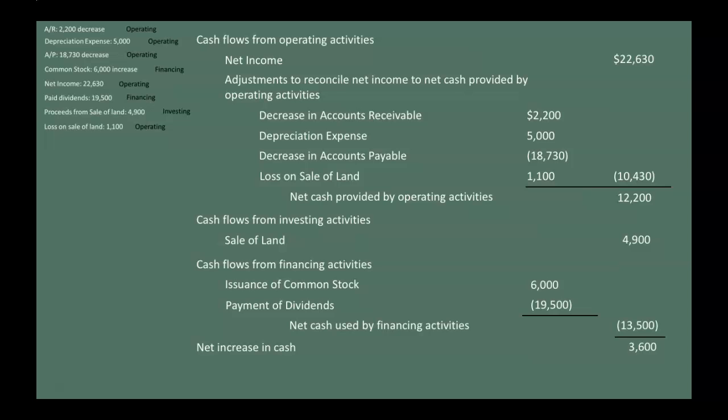To find the net increase or decrease in cash, we take net cash provided by operating activities ($12,200), add net cash provided by investing activities ($4,900), and subtract net cash used by financing activities ($13,500). Our cash increased by $3,600 throughout the year. We then list cash at the beginning of the period — $10,700 from the prior year's balance sheet — and add $3,600 to show cash at the end of the period.